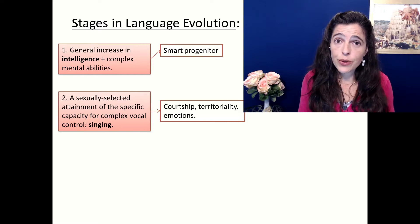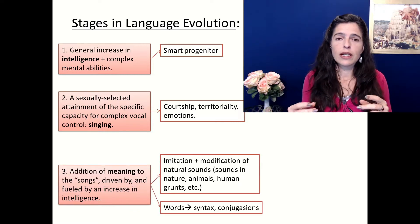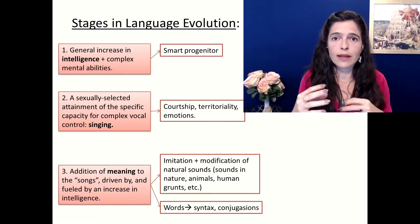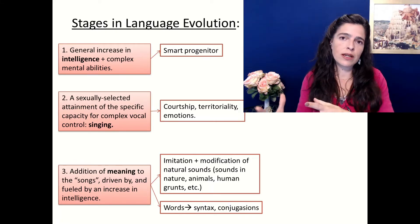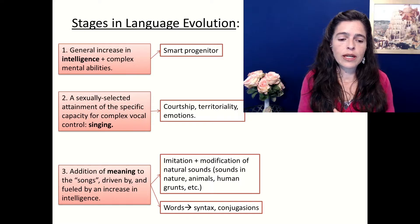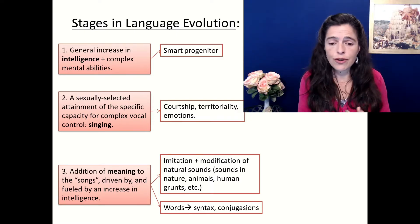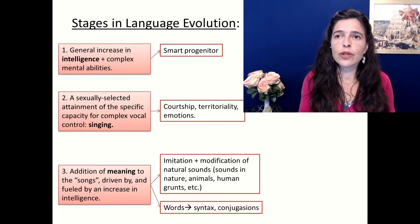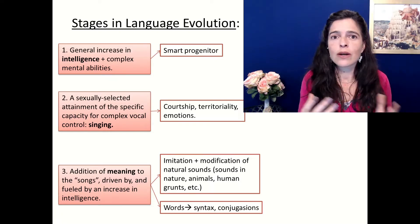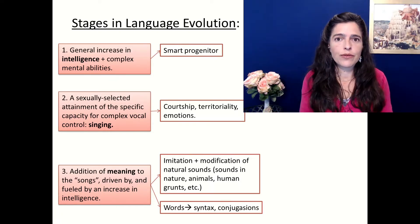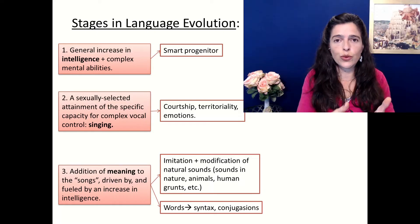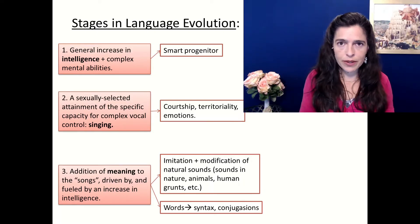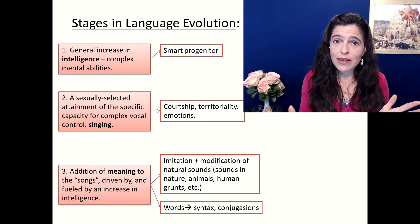Stage three is that they started adding meaning to those songs. That purely emotional, instinctive singing started acquiring meaning — first by imitating sounds in nature and animals, kind of like onomatopoeia, like 'splash,' which sounds like what it does. Then little by little, people separated that string of sounds into words, syntax, and all the complex grammar we have today. That's basically Darwin's theory about language.